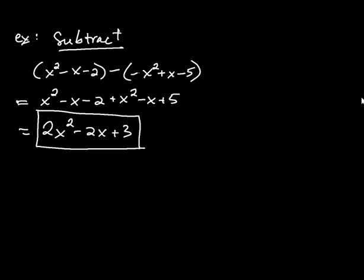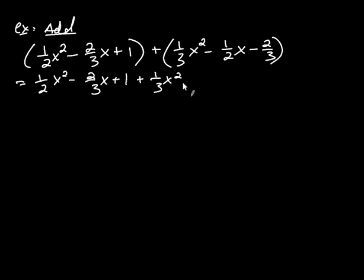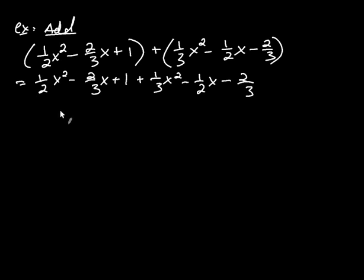Let's try one more that's a little more challenging — one that involves fractions. Let's add these two polynomials together. Because it's addition, we can drop the parentheses, giving us one-half x squared minus two-thirds x plus 1, plus one-third x squared minus one-half x, minus two-thirds. The tricky part here is that the coefficients are fractions.